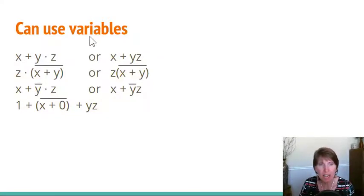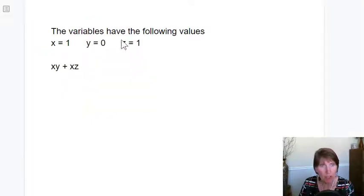Let's go ahead and do some of this math. So consider that we have three variables x, y, and z, and x is 1 and y is 0 and z is 1. How can we evaluate this Boolean expression?